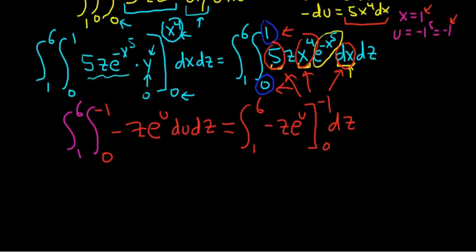So now we're going to integrate. Now we have to plug in the values, right? So we're going to plug in this first for the u. Subtract and then plug in this. So we have the integral from 1 to 6. The negative z, I'm going to leave it outside. So negative z. Now we're plugging in negative 1. So it's e to the negative 1 minus, and then e to the 0. Well, e to the 0 is simply 1. And then we have dz.